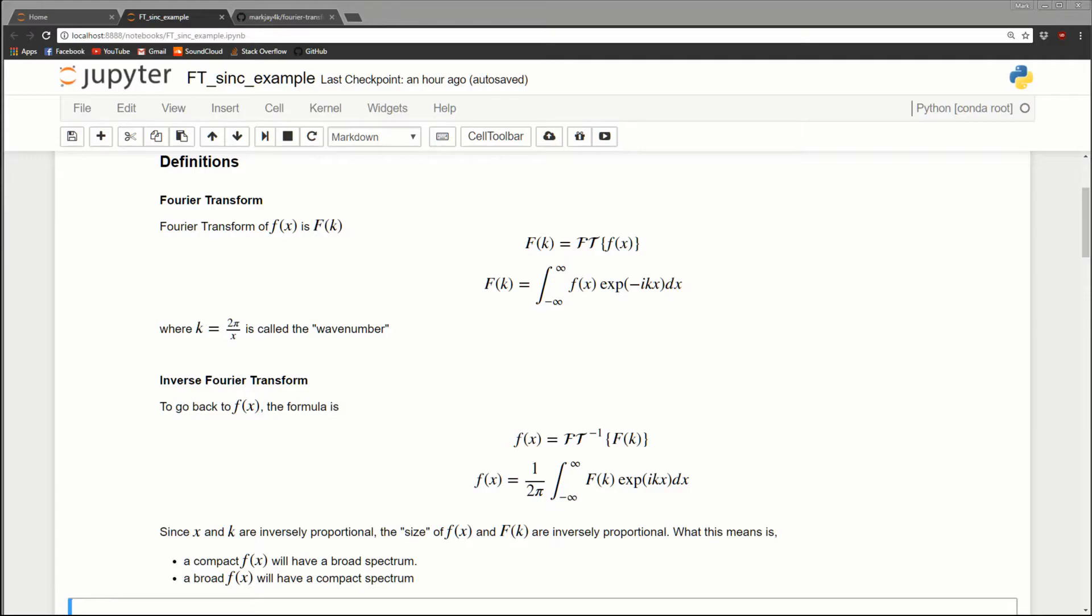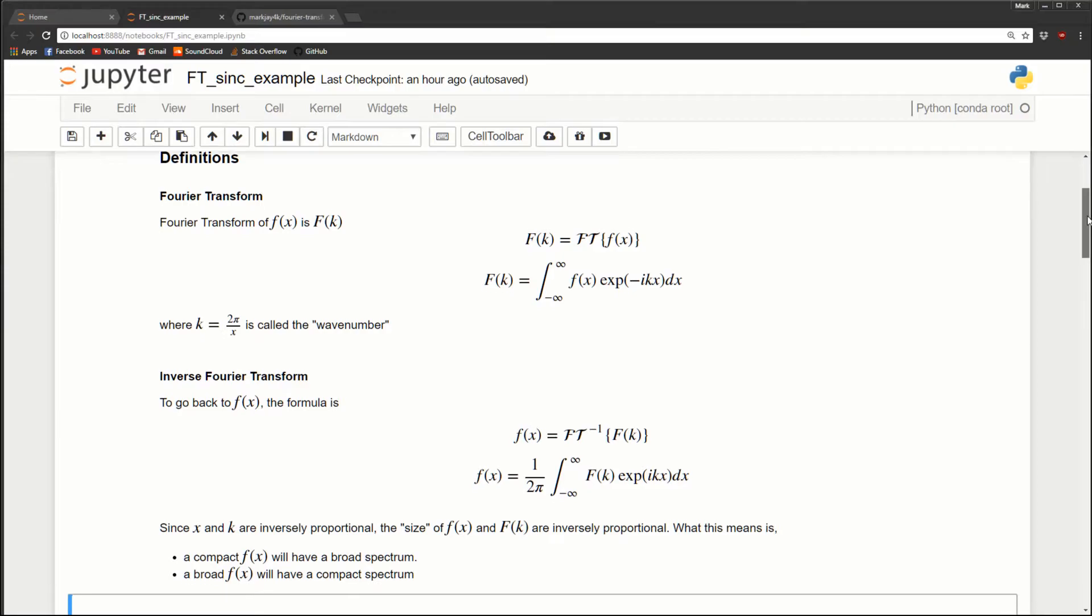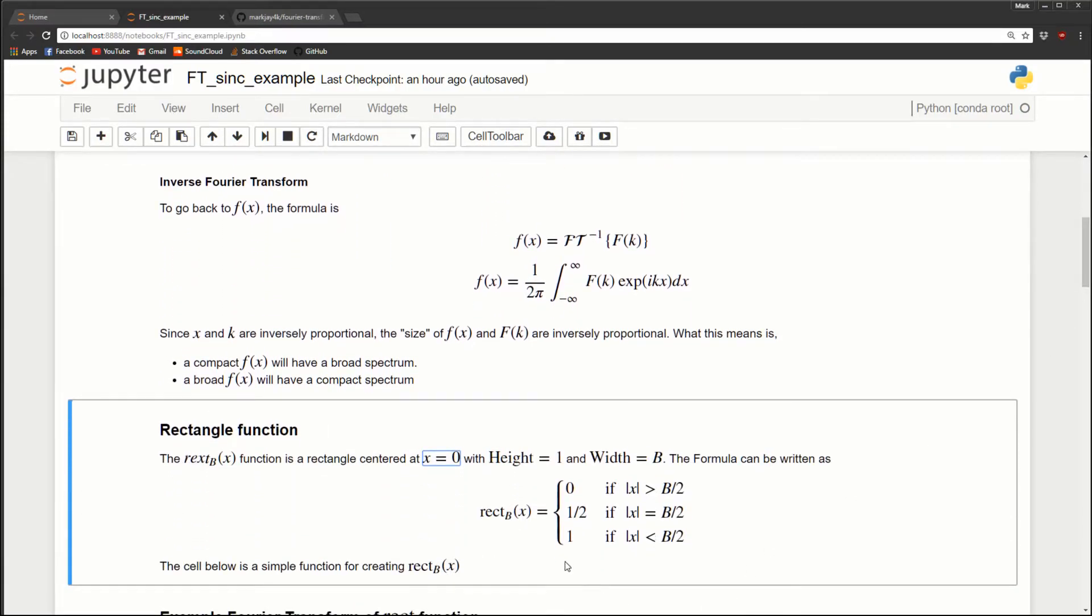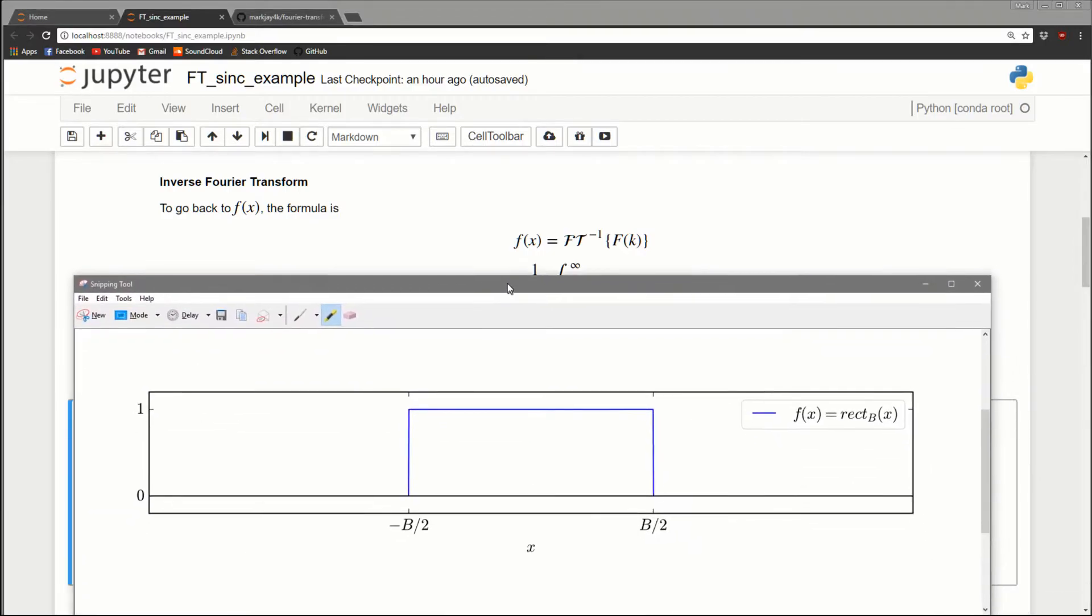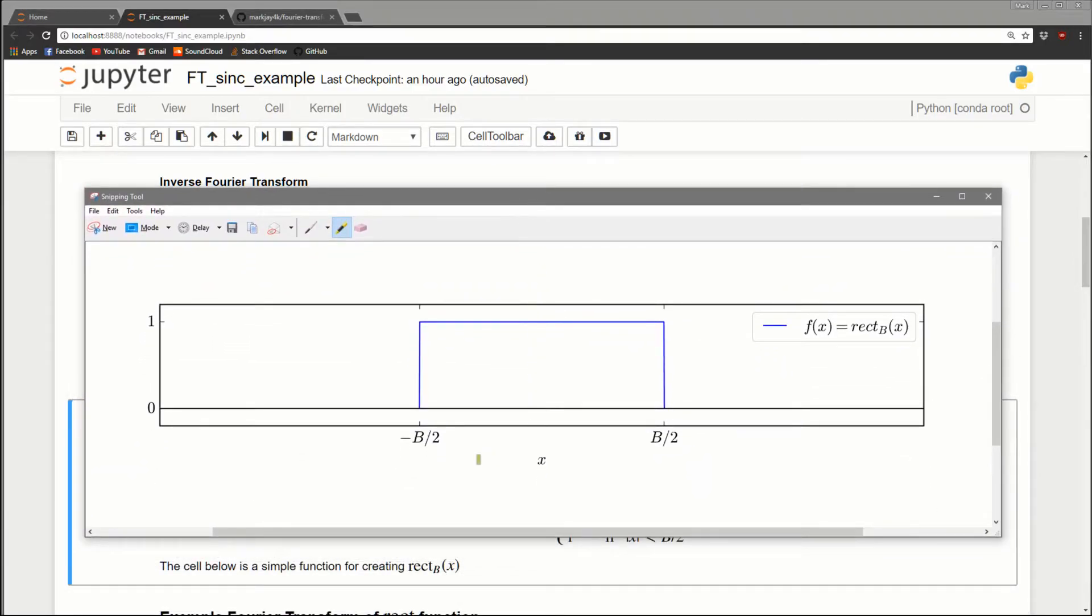Let's look at an example. The example I'm going to use is the rectangle function. We call it rect sub b. Think of a box that has height one, width of b, and it's centered at x equals zero. Here's the mathematical definition, but I think the easiest way to visualize it is just to look at it. It's going to be a box with width b, going from minus b over two to positive b over two, centered at x equals zero, and it's going to have a height of one. That's the rect function.